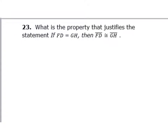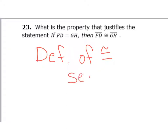That's used to say that something equals itself. Number 23: what is the property that justifies the statement that if the distance from F to D equals the distance from G to H, then segment FD is congruent to segment GH? The definition that says equal measures mean congruent is the definition of congruent segments.